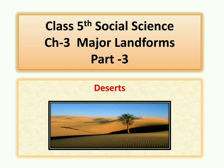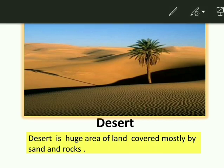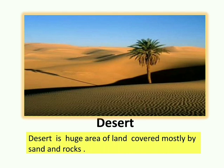Class 5th Social Science Chapter 3: Major Landforms Part 3. In this video, we will learn about deserts. A desert is a very large or widespread area of land which is mostly covered by sand and rocks.